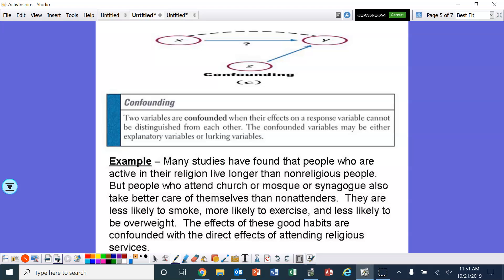Confounding, this is like confusing, all mixed up. All right, two variables are confounded when their effects on a response variable cannot be distinguished from each other. The confounding variables may be either explanatory variables or the lurking variables. All right, so we don't know.